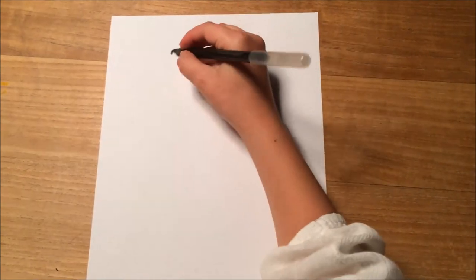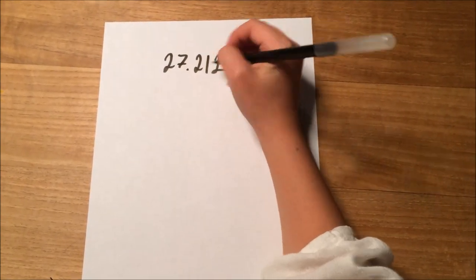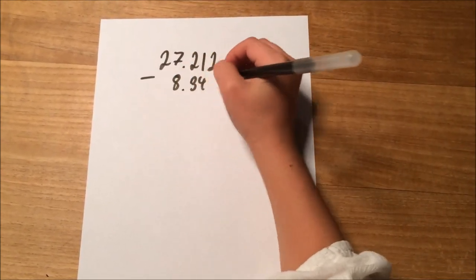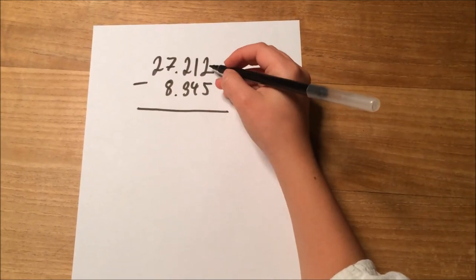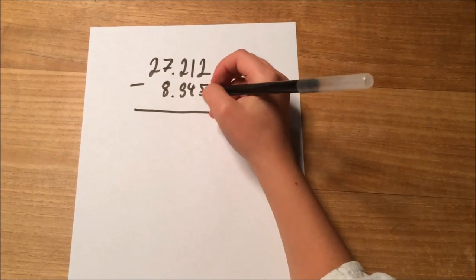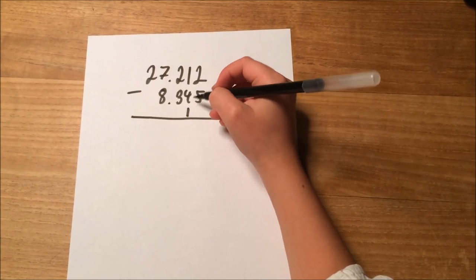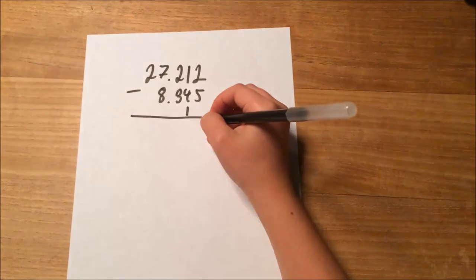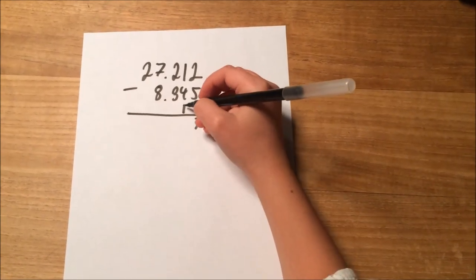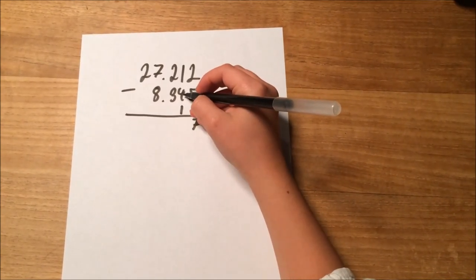Okay, let's do it the German way. Write down 27,212 minus 8,345. So, you'd have to do 5 to 2. That doesn't work. So you'd note down a 10 here. And you'd do 5 to 12, which is 7. Then you add the 10 to the 4, so you'd have 5.